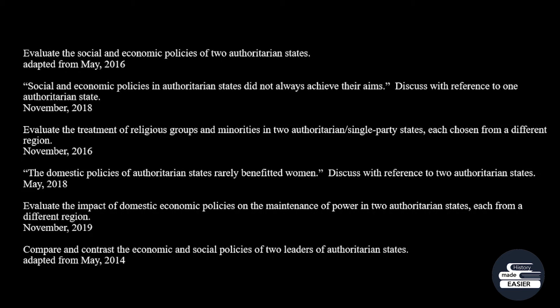Question three: evaluate the treatment of religious groups and minorities in two authoritarian single-party states, each chosen from a different region. You need to deal with both religious groups and minorities — they can overlap, but as you know, they don't necessarily. I would evaluate: was their influence nullified? The influence of religious groups? The impact on society of minorities? That's one way you can evaluate. But another way is: was the treatment of religious groups and minorities good, reasonable, or was it downright bad, downright immoral? And of course, you can evaluate whether the policies were successful or not.